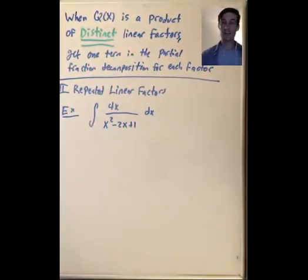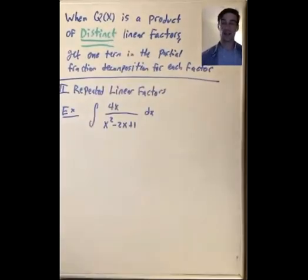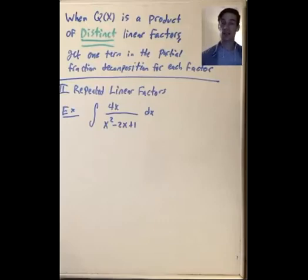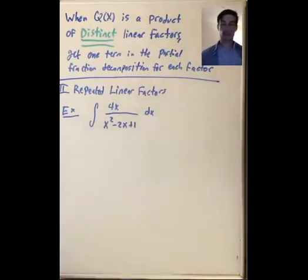In the examples we've seen so far, the denominator factors as a product of distinct linear factors, and each time in the partial fraction decomposition we got one term for each of these distinct linear factors. Like when our denominator was x squared minus 4, which is x minus 2 times x plus 2, we got 1 over x squared minus 4 equals a over x minus 2 plus b over x plus 2 — one term for each factor. But what if one of your factors is repeated?